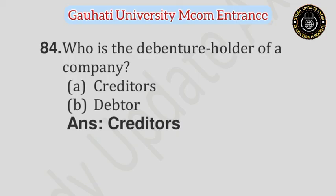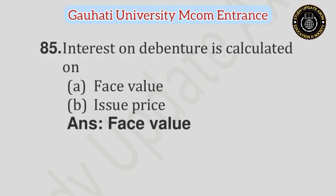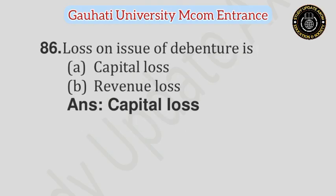Question number 84: Who is the debenture holder of a company? — Option A: Creditors, Option B: Debtor. Answer is Creditors. Question number 85: Interest on debenture is calculated on — Option A: Face value, Option B: Issue price. Answer is Face value. Question number 86: Loss on issue of debenture is — Option A: Capital loss, Option B: Revenue loss. Answer is Capital loss.